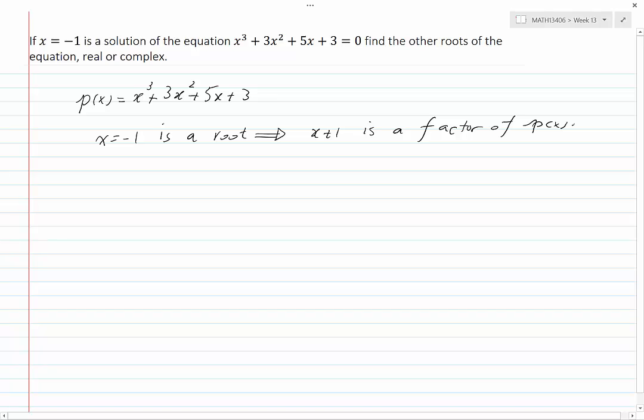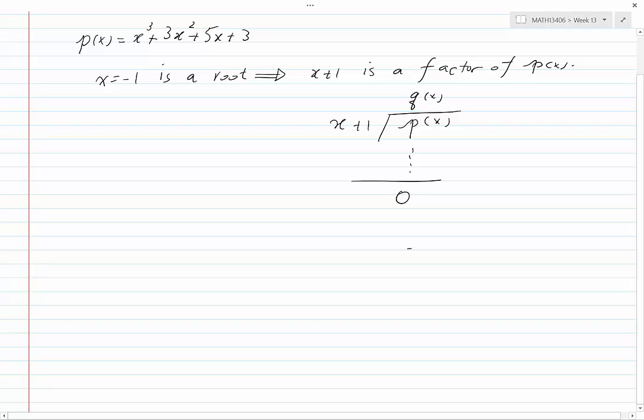This means that if we divide P(x) by x plus 1, we will get a quotient Q(x) and a remainder which is 0. Let's perform the division.